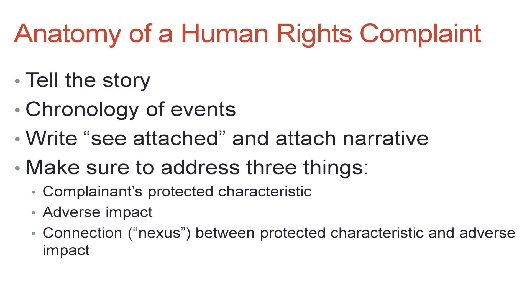Who remembers how long you have to make a human rights complaint after something happens? You have one year — it used to be only six months but it's now a year. So there is the possibility that you deal with your immediate urgent housing situation first and then decide later whether you want to make a human rights complaint. When telling your story in a complaint, write 'see attached' on the form and tell your story on a separate document. Make sure your story includes three things: what the respondent did, what the negative impact on you was, and how a protected characteristic was a factor.